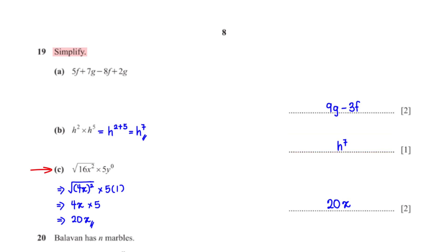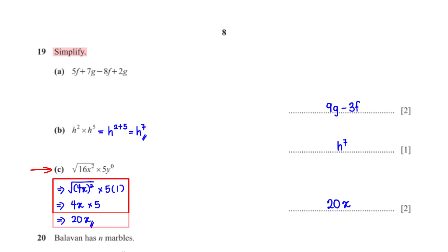Simplify √(16x²) × 5y⁰. 16x² can be written as (4x)², and y⁰ = 1. The square root of (4x)² is 4x. So 4x × 5 × 1 = 20x.